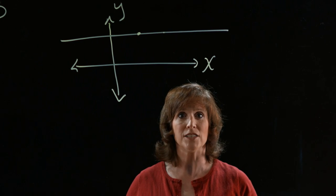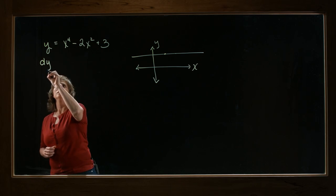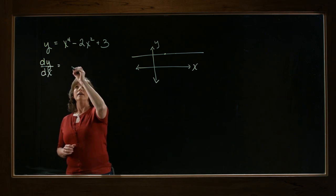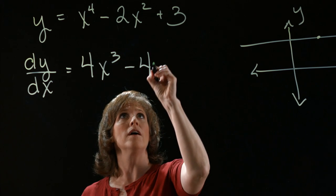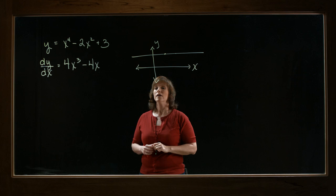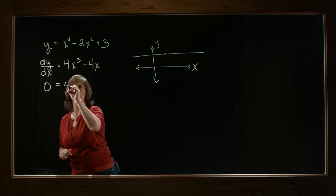To find the slope of the tangent line, we need the derivative. So dy dx equals 4x to the third minus 4x plus zero. So when does this equal zero? I'm going to take the derivative and set it equal to zero.